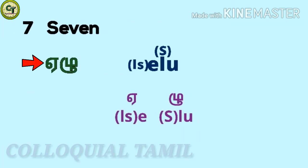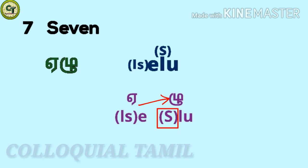For seven: 'eilu'. E — a long letter, ru — a short letter. This 'l' belongs to the group of special iila letters, so I put 's' for special to represent it. To pronounce it, move the tip of your tongue towards the back roof of your mouth and say it: eilu.